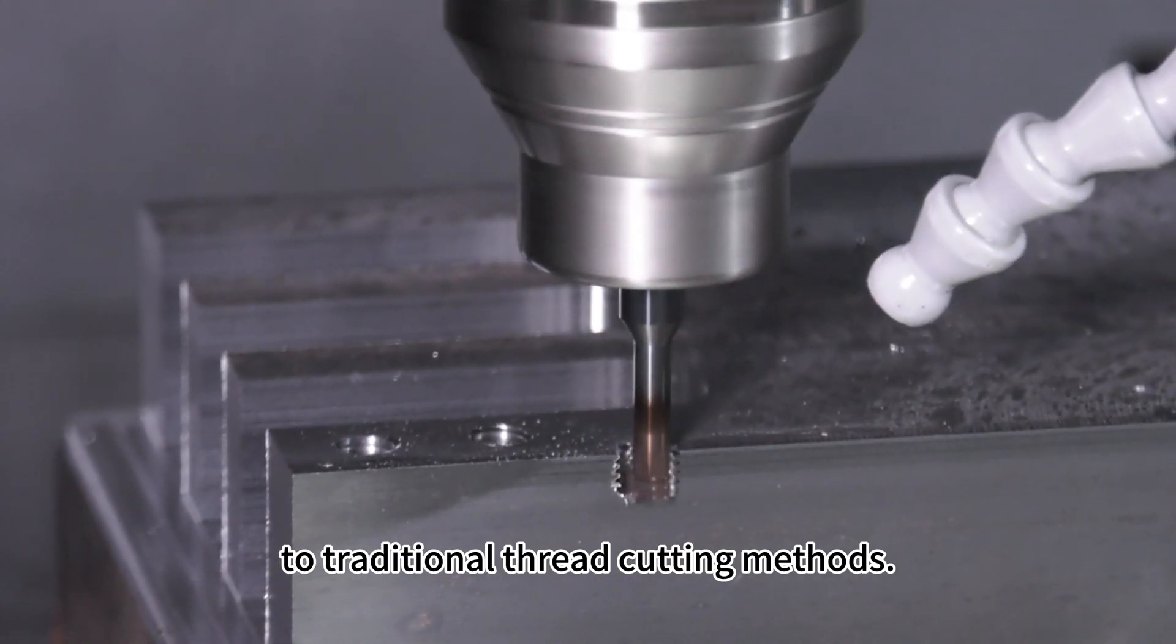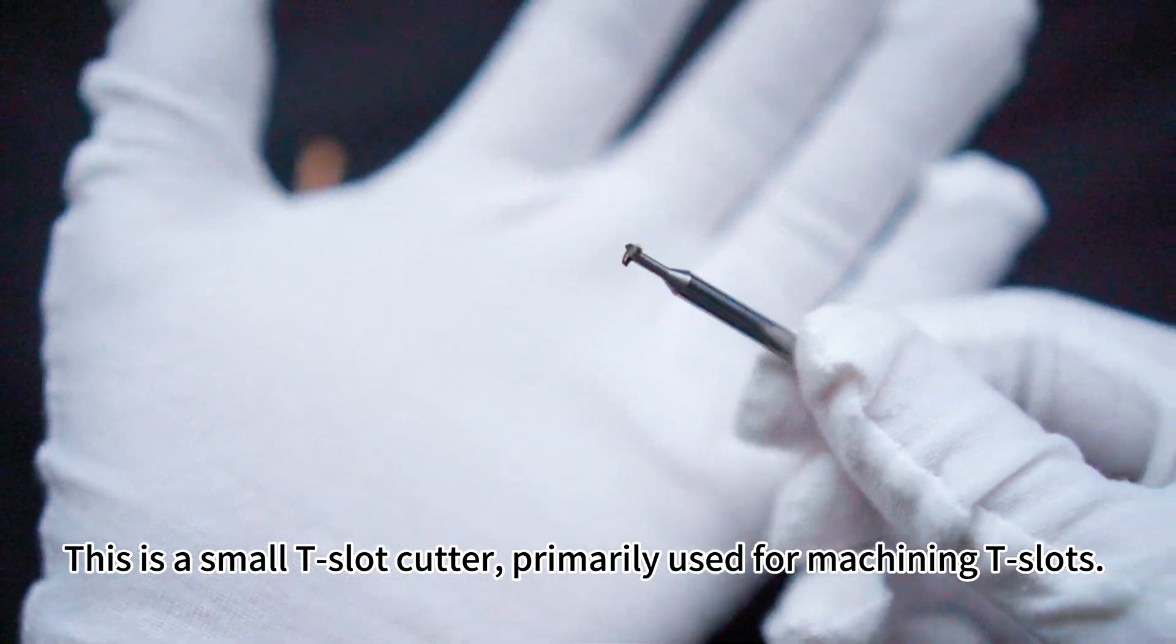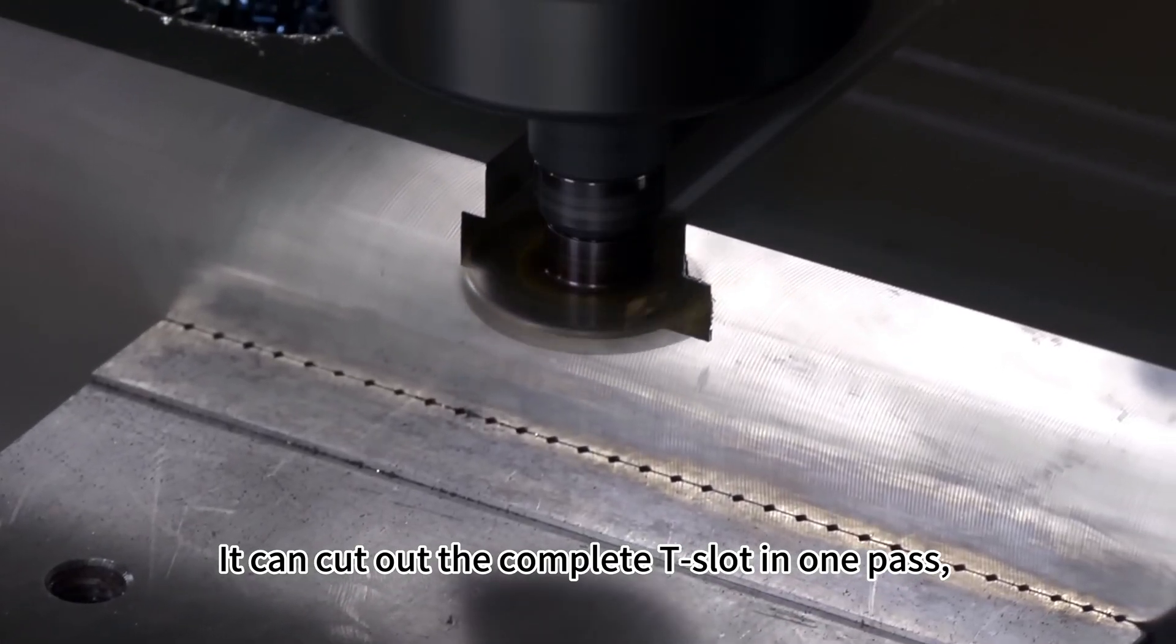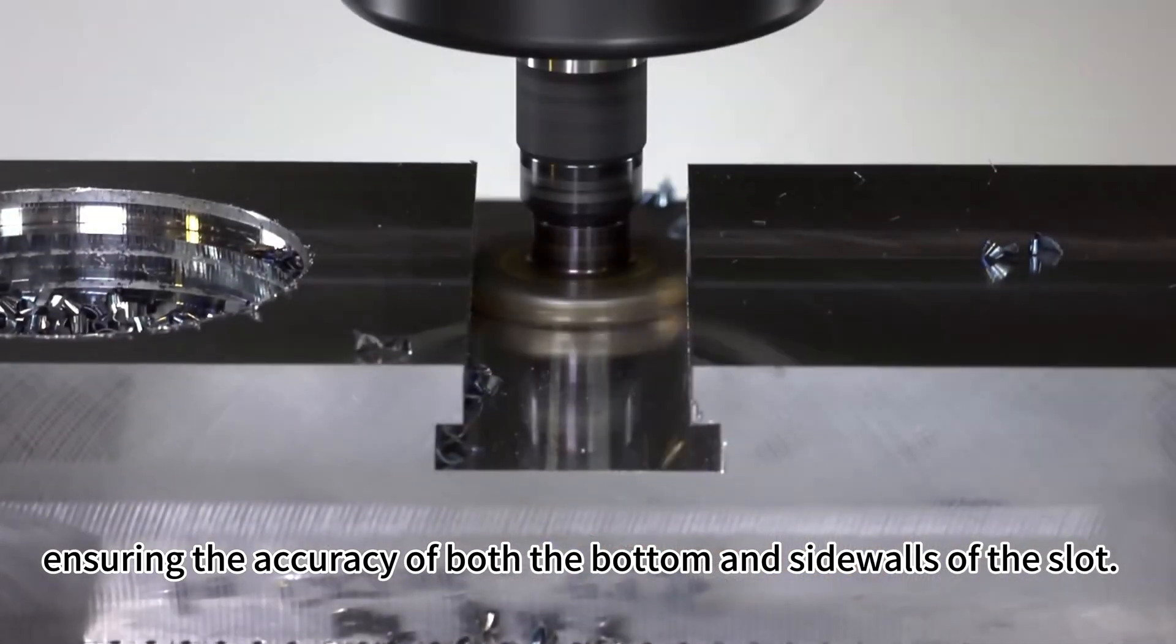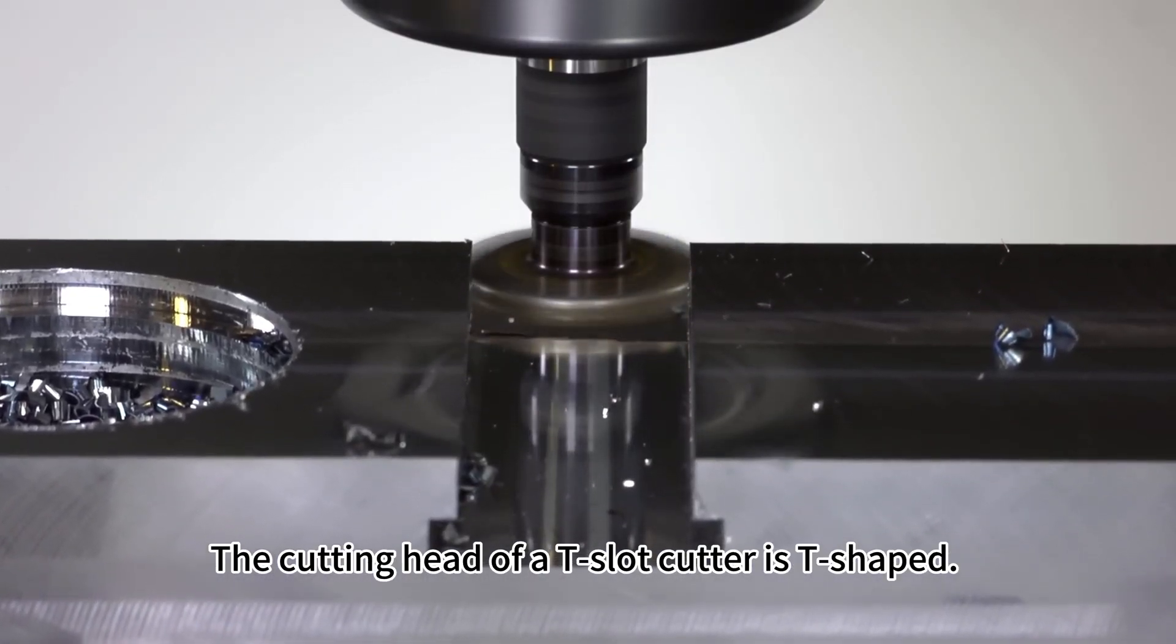This is a small t-slot cutter, primarily used for machining t-slots. It can cut out the complete t-slot in one pass, ensuring the accuracy of both the bottom and sidewalls of the slot.